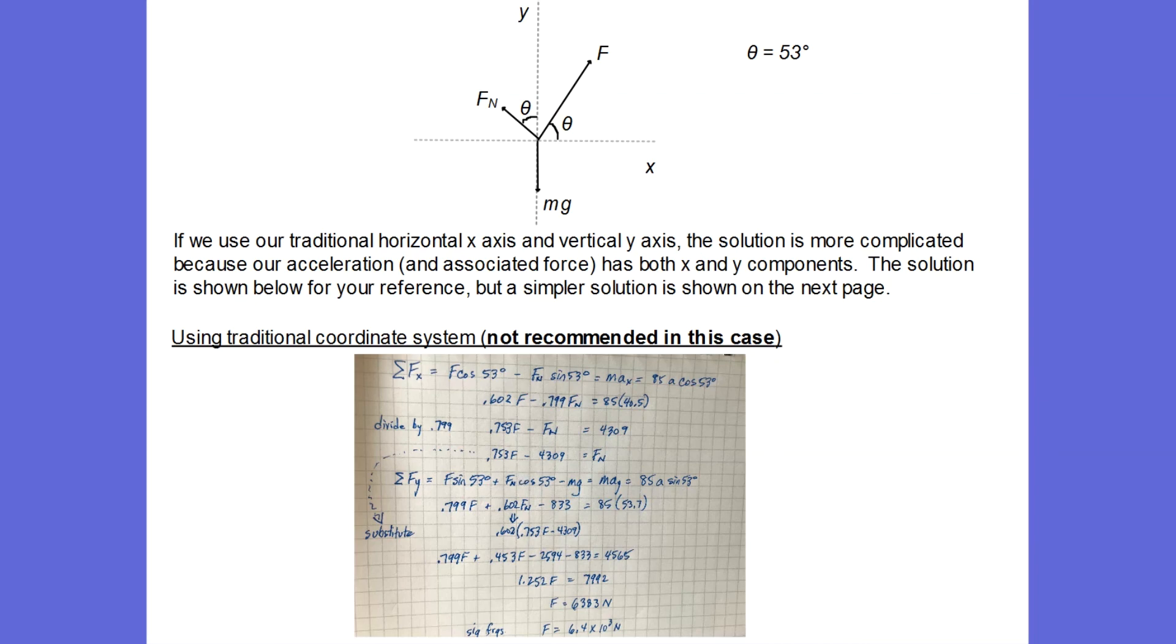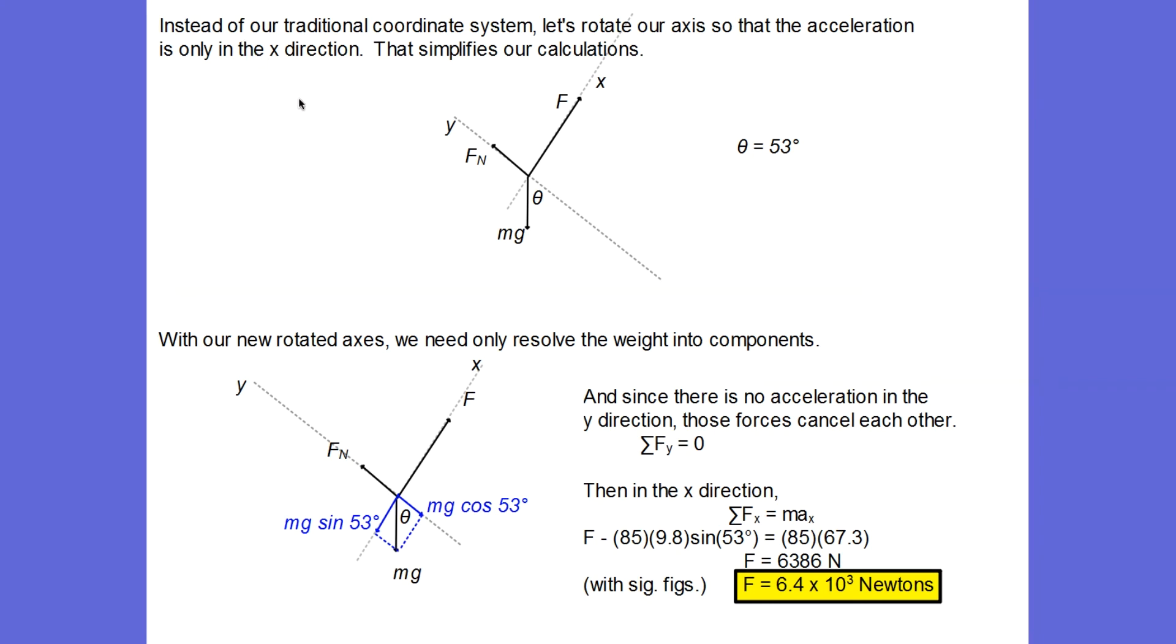we take our coordinate system and we rotate it so that our acceleration and our movement is along the x-axis. Because when we do that, what we're going to find is the forces in the y, because there is no acceleration in the y direction, the forces in the y are going to cancel each other out. And I don't have to worry about those. So the normal force, I don't care about it, because that's in the y direction now. And there's no acceleration in the y. All I care about is the x direction.